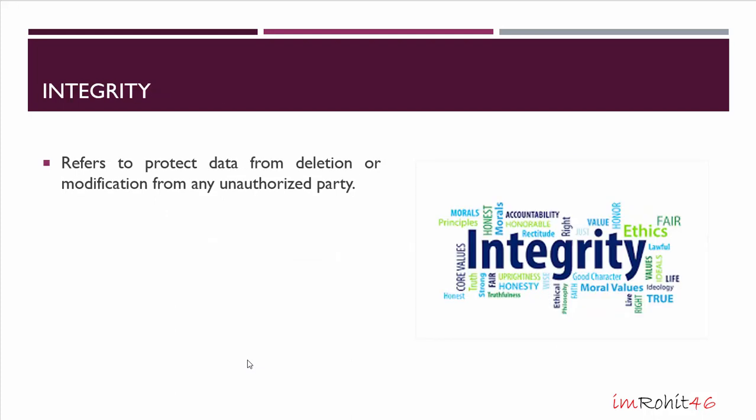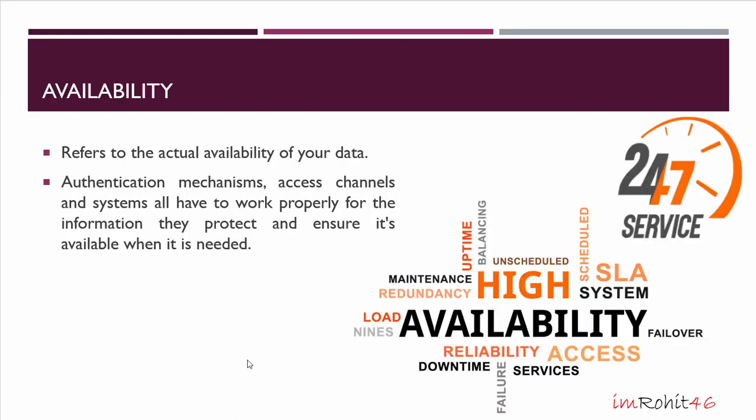Let's look at integrity. Integrity assures that the data or information system can be trusted, ensures that it is edited by only authorized persons, and remains in its original state when at rest. Data encryption and hashing algorithms are key processes in providing integrity.